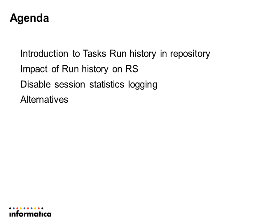In this presentation we will discuss topics as shown on the screen. We will begin with some basic introduction to run history, what is the impact of this run history on the repository service performance and availability, how we can disable statistics logging, and we'll have a quick demo on how we can do that for a particular session. We'll also discuss the alternatives we have.